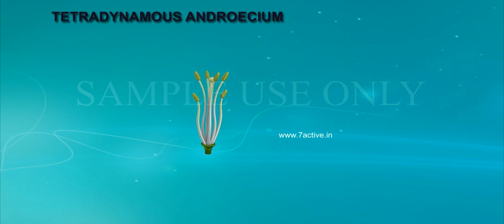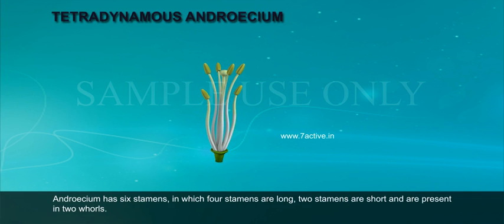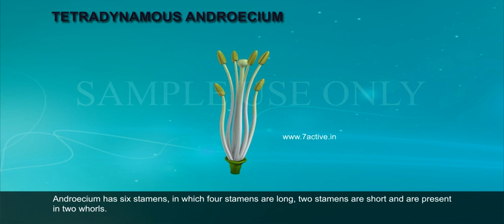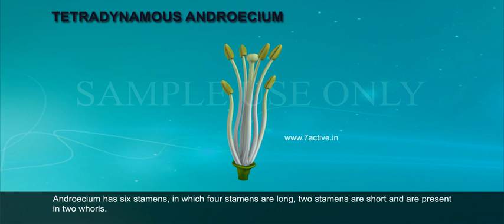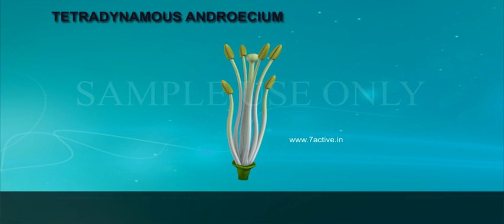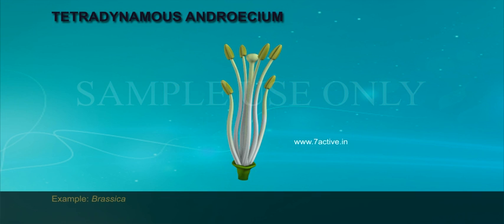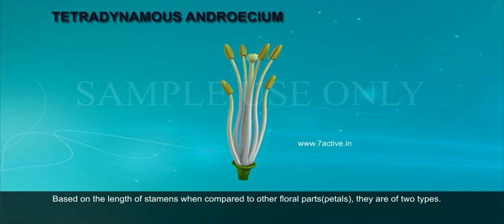Tetradynamous androcium: Androcium has six stamens, in which four stamens are long and two stamens are short, present in two whorls. It is a characteristic feature of the family Brassicaceae. Example: Brassica. Based on the length of stamens compared to other floral parts such as petals, they are of two types.